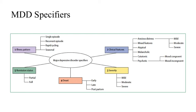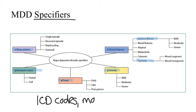There are several specifiers that can be identified when a diagnosis of major depressive disorder is made. These specifiers include the illness pattern, various clinical features like the presence of anxiety or psychosis, severity, onset, and remission status. These specifiers are identified with a specific ICD code and may dictate aspects of therapy and treatment.